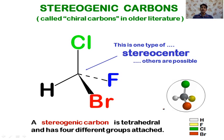Another related term is stereogenic carbon, which is also similar to chiral carbon. A carbon atom that has all four groups different is known as a stereogenic center.